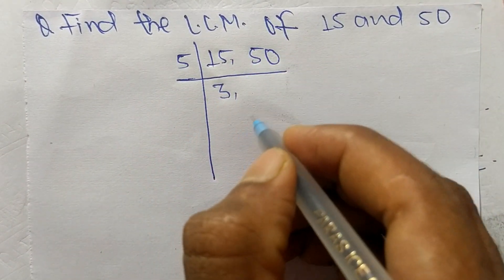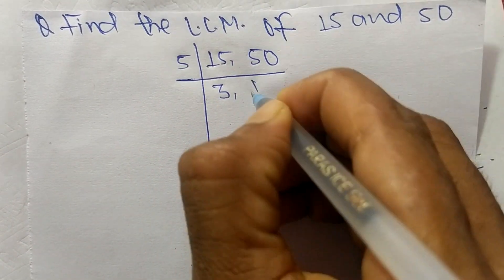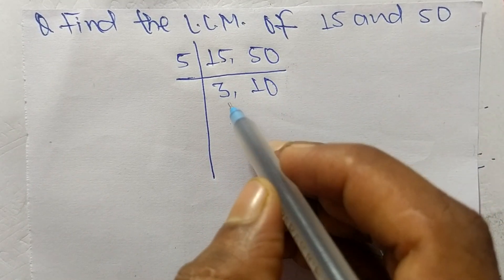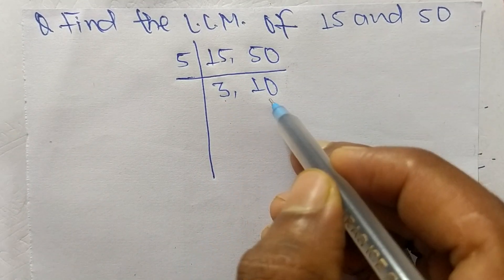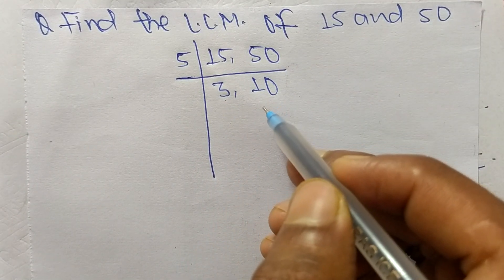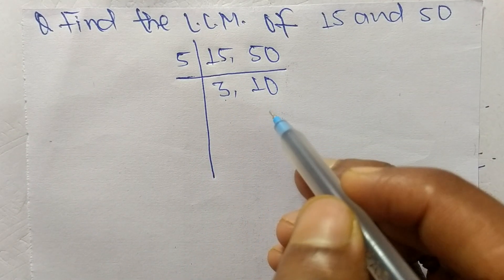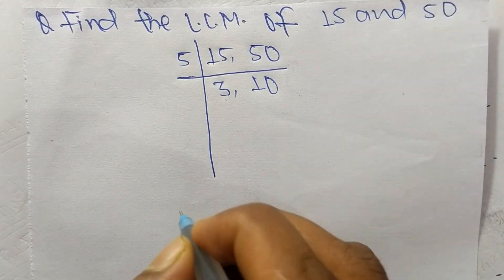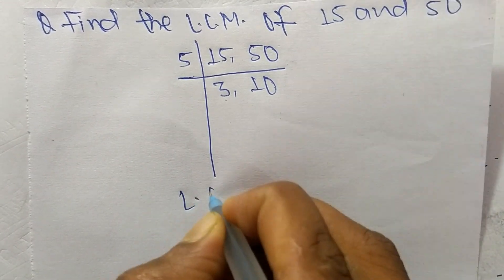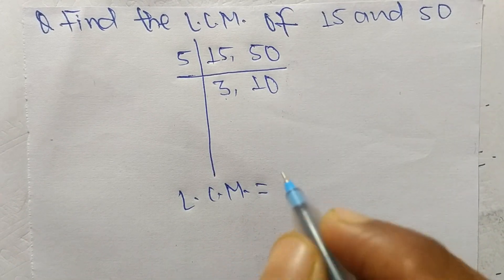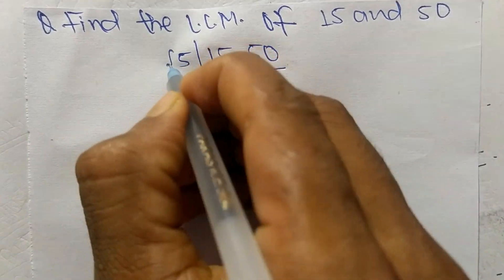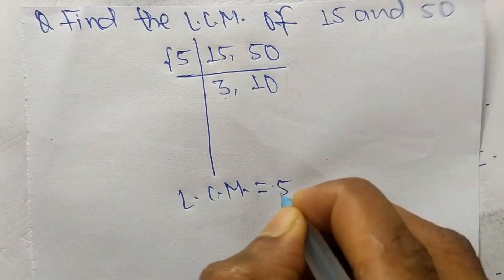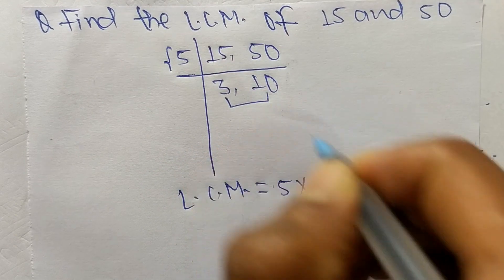And 5 times 10 equals 50. So we have here 3 and 10, which are not exactly divisible by the same number. So the LCM is calculated from this part: it is 5.